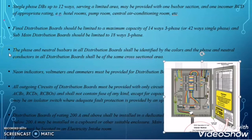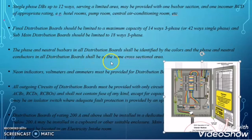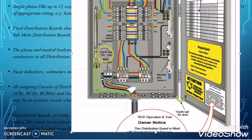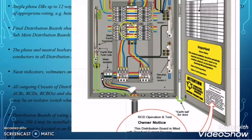The next ADDC clause states that the phase and neutral bus bars in all distribution boards shall be identified by color — R phase by red, Y phase by yellow, and B phase by blue. The cross-section area of the neutral bus bar should be the same as the cross-section area of the phase bus bar. Additionally, neon indicators, voltmeters, and ammeters must be provided for distribution boards rated at 400 amperes and above.